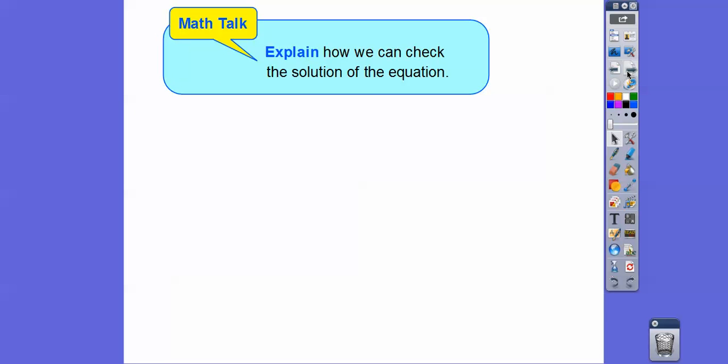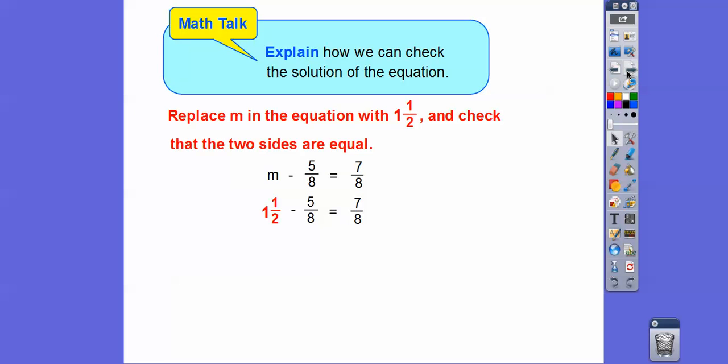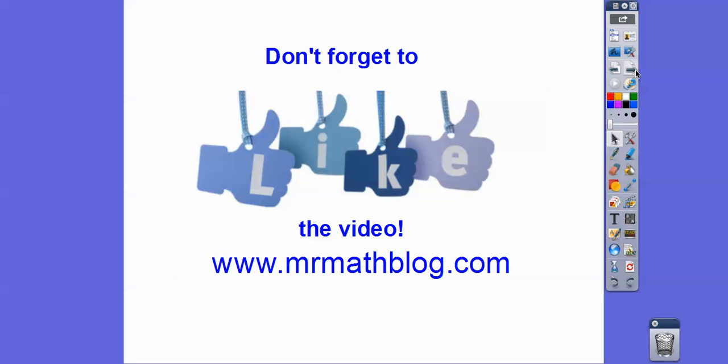Explain how we can check the solution of the equation. We can replace m in the equation with 1 and 1/2 and check that the two sides are equal. We had m - 5/8 = 7/8, so we put in 1 and 1/2 for our answer. If you forget how to make common denominators, convert it to an improper fraction. We multiply by 4/4 to change to eighths. 3 times 4 is 12, 2 times 4 is 8, and now we have a common denominator. 12/8 minus 5/8 is 7/8 - it does check out. I hope that makes sense and take care. I hope you're having a great year.